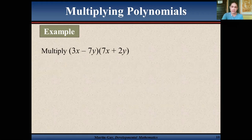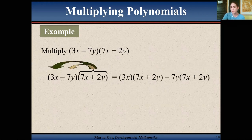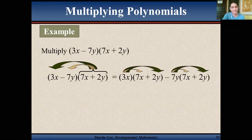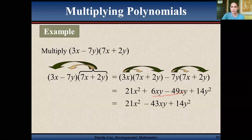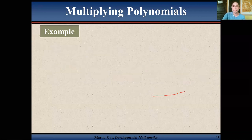Multiply 3x minus 7y and 7x plus 2y. Distribute 3x to 7x plus 2y and distribute negative 7y to 7x plus 2y, applying the distributive property. That gives you 21x² plus 6xy minus 49xy minus 14y². Combining like terms: 6 minus 49 is negative 43, so the final answer is 21x² minus 43xy minus 14y².